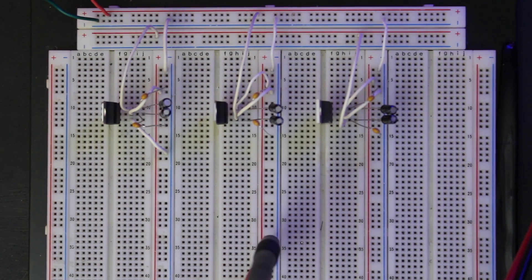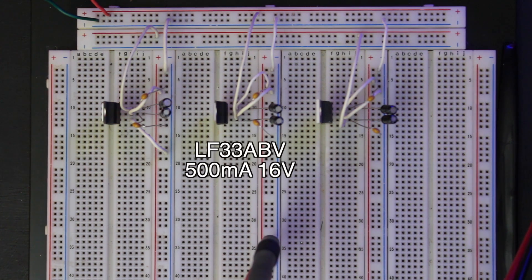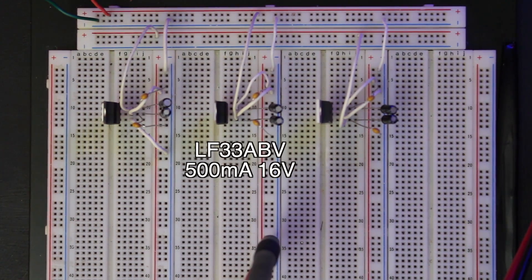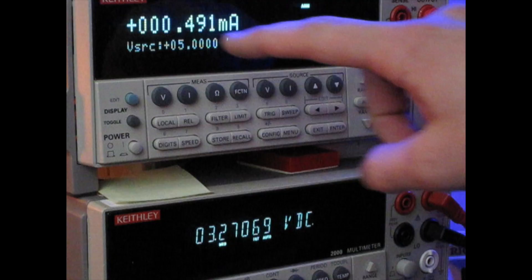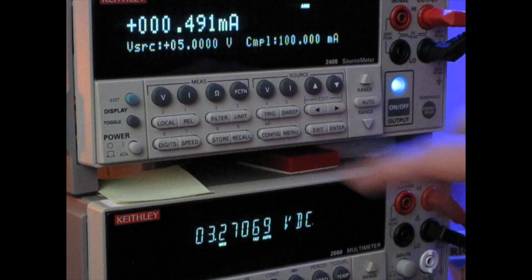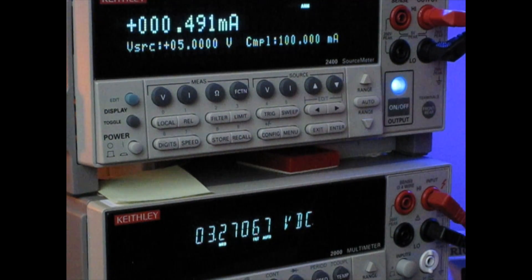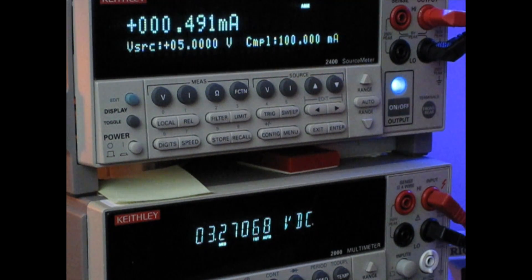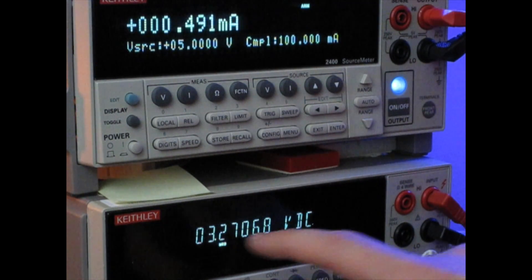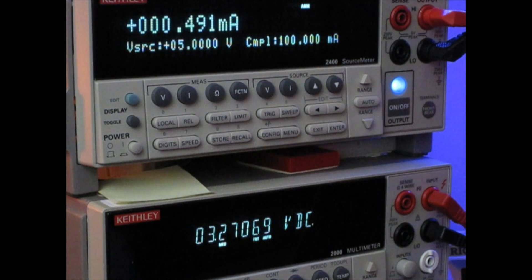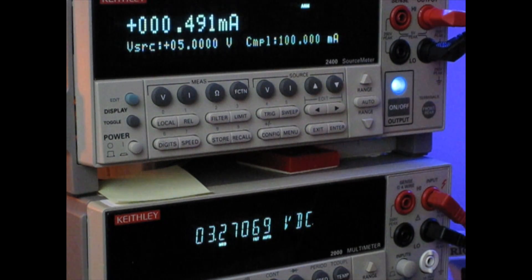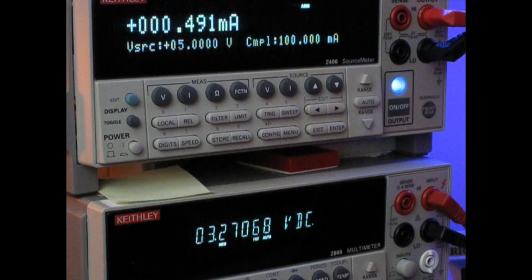Okay, so the next one is the LF33ABV. This one can do 500 milliamps with a 16 volt max input voltage. So that's pretty good. And you can see up on the meter, we've got much better results here. This one's only pulling about 500 microamps, or 0.491 milliamps. So that's pretty good. That's a lot better than 5 milliamps. The output voltage is also looking pretty good. We've got 3.27 volts. That is still within spec. It's not a perfect 3.3 volts, but it is still within spec. So that's pretty good as well.